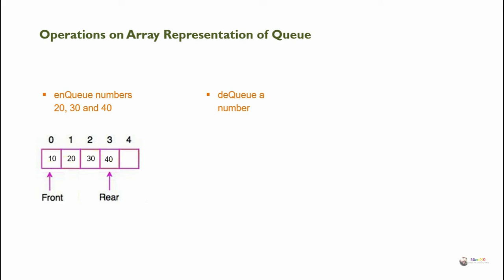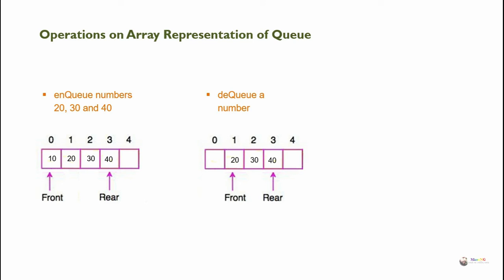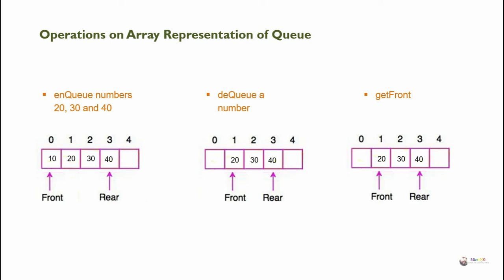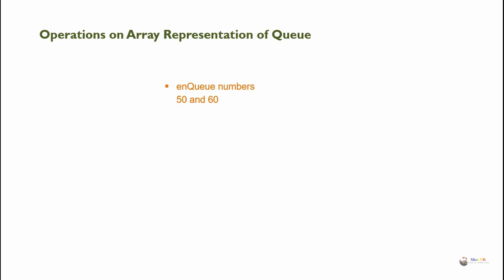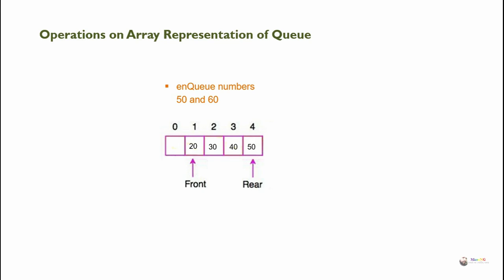Next, we perform a dequeue operation. While performing dequeue, the value of front is increased by 1, so front moves to the first index. We then perform getFront — getFront retrieves the value currently at front, which is 20, and returns the front element which is 20. Now we further perform enqueue of numbers 50 and 60. Currently rear is pointing to index 3, so while enqueuing 50, rear comes to the fourth index and 50 is stored. Now enqueuing 60 is not possible because rear has already reached max minus 1, which is 4. So it gives queue overflow — overflow occurs while enqueuing 60 because rear has reached max minus 1 which is 4.